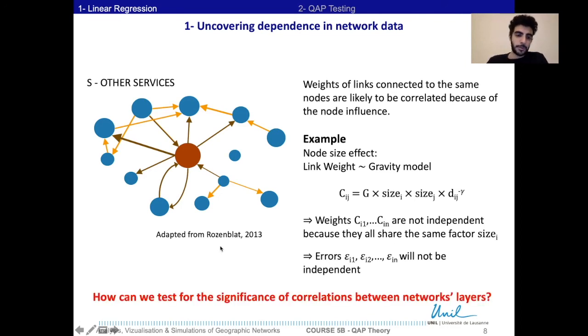Then the question is: how can we test for the significance of the correlations between the network layers? That's what we will see in the second part with the QAP test.